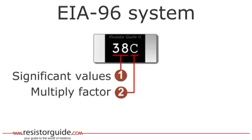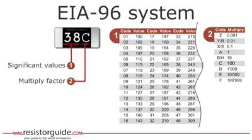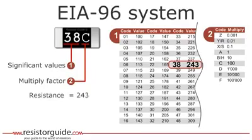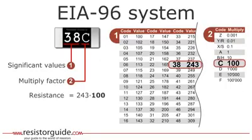The third character also represents a code to retrieve the multiply factor. Let's solve this particular example. By looking up 38 in table 1 we find a value of 243. In table 2 we find that the letter C means a multiply factor of 100. This resistor therefore has a value of 24.3 kilo ohms.